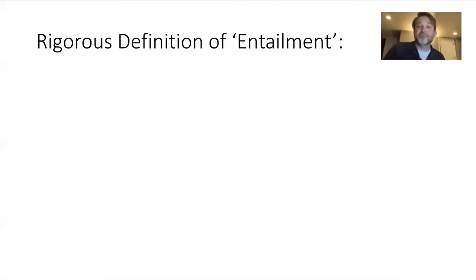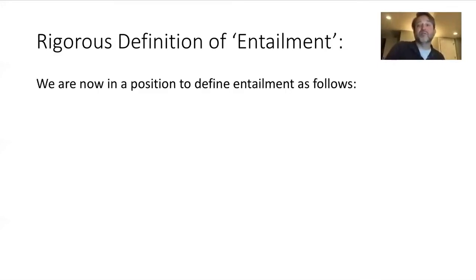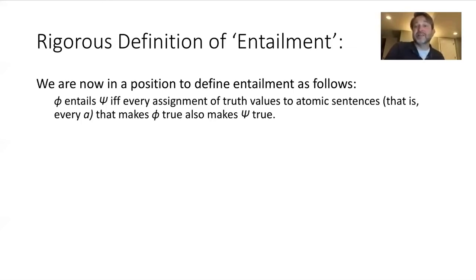So using this notion of logical truth on a model — the model giving us the truth of the sentences contained within alpha, and our notion of v, which gives us a function from these atomic sentences to all of the true sentences that can be established using our connectives — given these two things, we can come up with a rigorous definition of entailment. We'll say phi entails psi if and only if every assignment of truth values to atomic sentences, that is every alpha, that makes phi true also makes psi true.